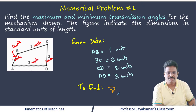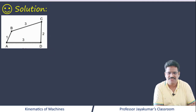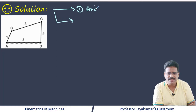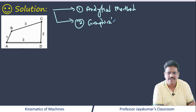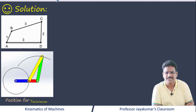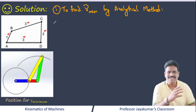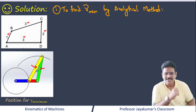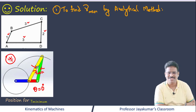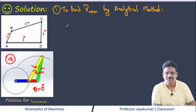This problem can be approached by two methods: analytical method and graphical method. First, let us solve by the analytical method. To find the minimum transmission angle analytically, we have understood from theory that the transmission angle will be minimum when the crank angle is 0 degrees. So let me draw a rough diagram.